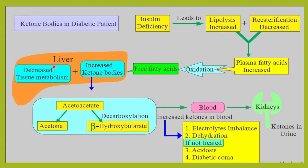In a diabetic patient — diabetic ketoacidosis being very common — there is insulin deficiency or decreased insulin sensitivity. Because of this, the body cannot utilize carbohydrates, which causes lipolysis. Lipolysis increases plasma fatty acids, which are oxidized to form free fatty acids. Once these enter the liver, they form ketone bodies: acetoacetate, acetone, and beta-hydroxybutyrate.